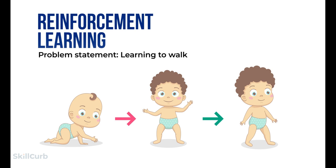To understand reinforcement learning further, suppose we need to teach a child how to walk. First, the child notices and tries to replicate people walking. Before walking, the child realizes they need to stand, then remain standing still, and finally take steps. Translating this to reinforcement learning: the problem statement is how to walk; the child is the agent; the environment is the people around them; the action is walking; each step is a new state; and for achieving each sub-task, the child gets a reward — such as a treat. Failing to take a step is the punishment.